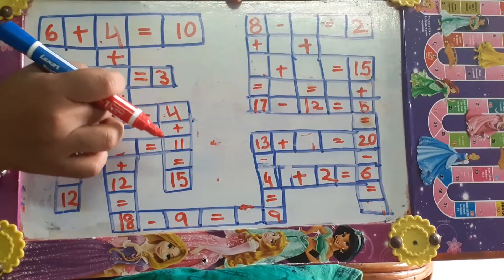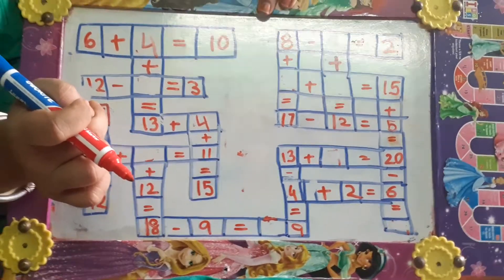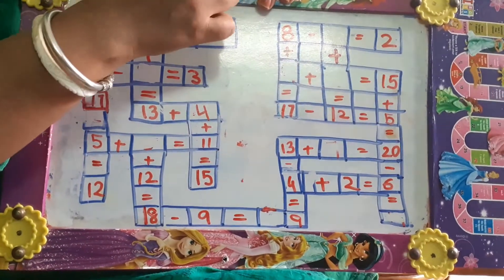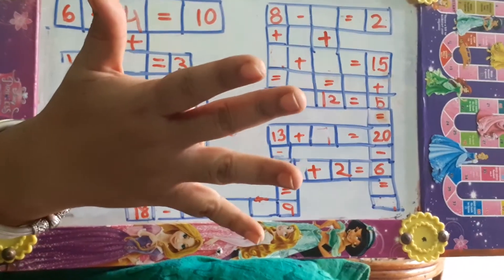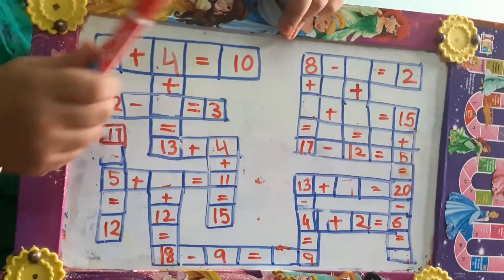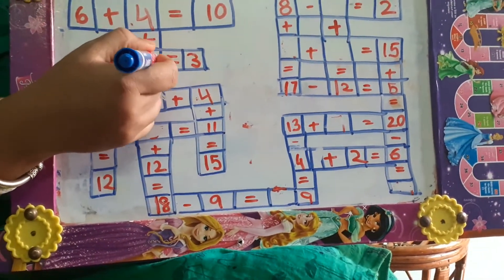4 plus dash is equal to 13. 4 after, 5, 6, 7, 8, 9, 10, 11, 12, 13. It is 9.